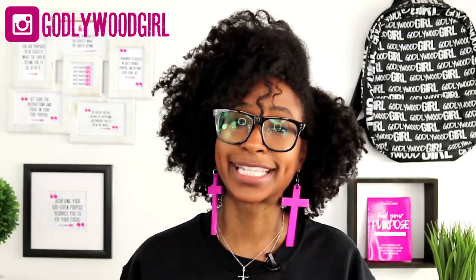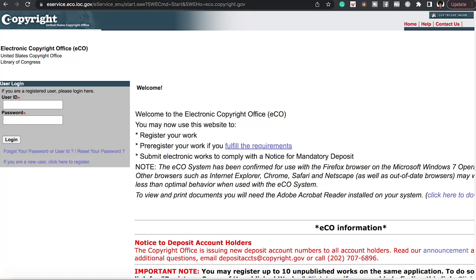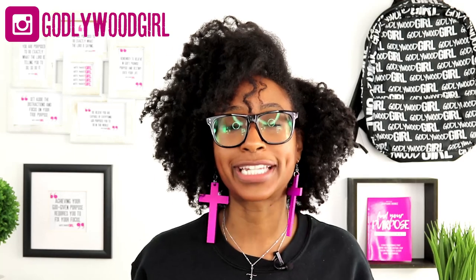Step number three for how to copyright your t-shirt business designs: go ahead and fill out the form, upload your t-shirt design — hopefully you saved it as a PNG or a JPEG — pay the fee, and submit your application. And that is how you actually copyright your t-shirt design.